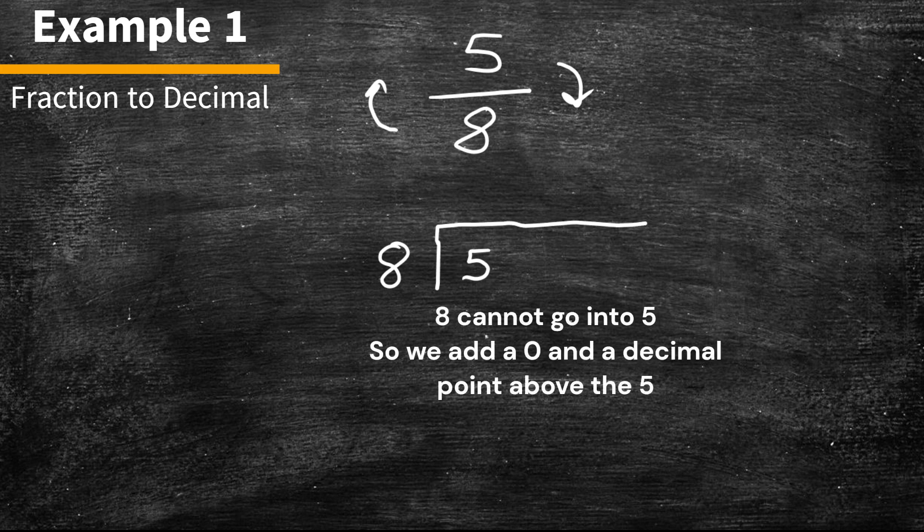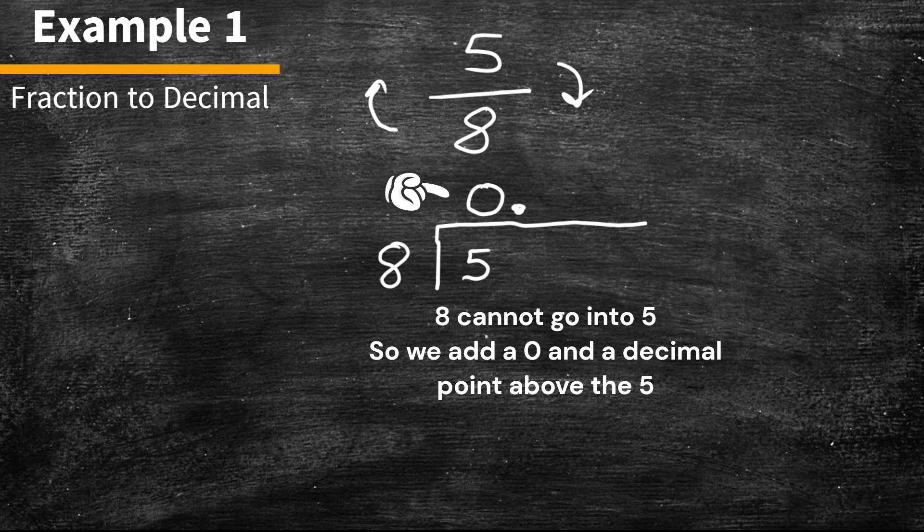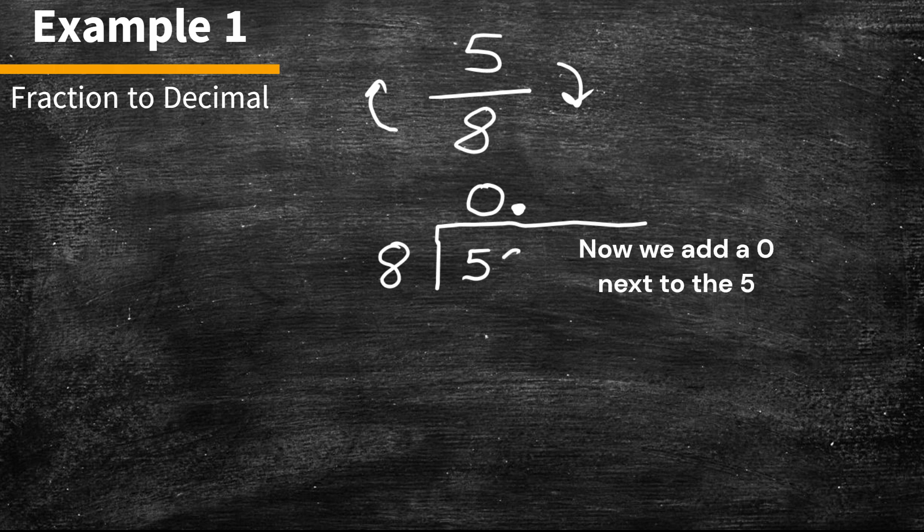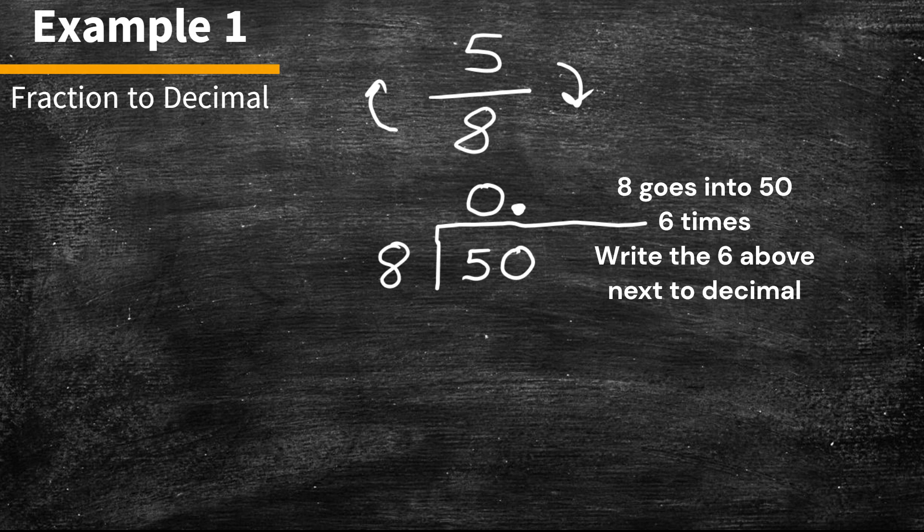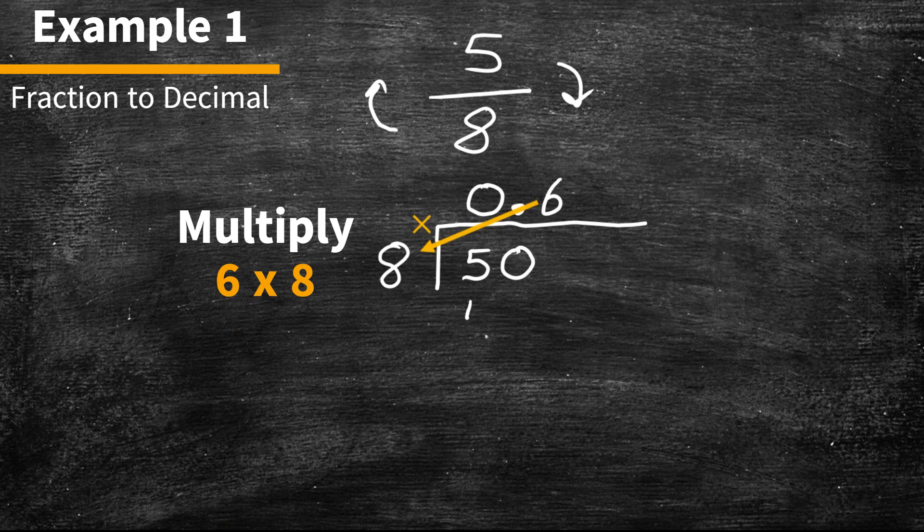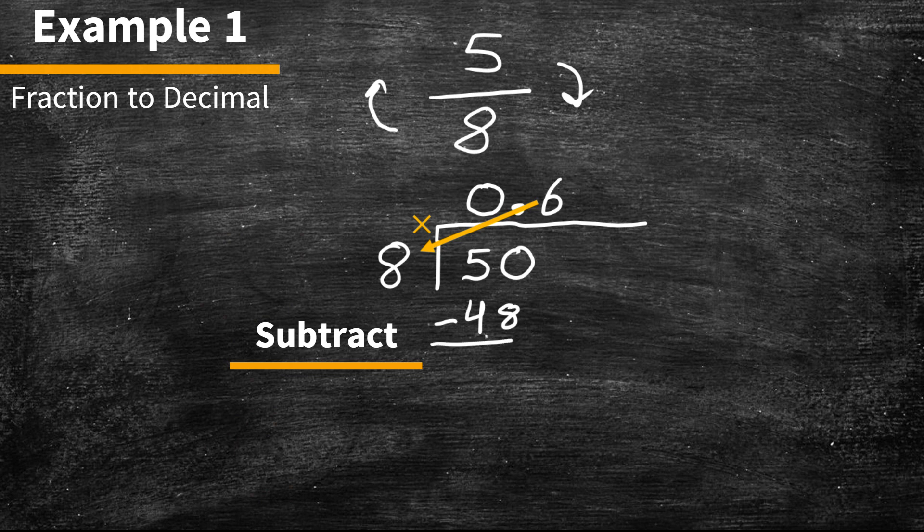8 cannot go into 5. Therefore, what we do is we add a 0 above the 5 and a decimal. Now we add a 0 next to the 5. 8 goes into 50 6 times. What we do from here is multiply 6 times 8, which will give us 48. And now we subtract. 50 minus 48 is 2.